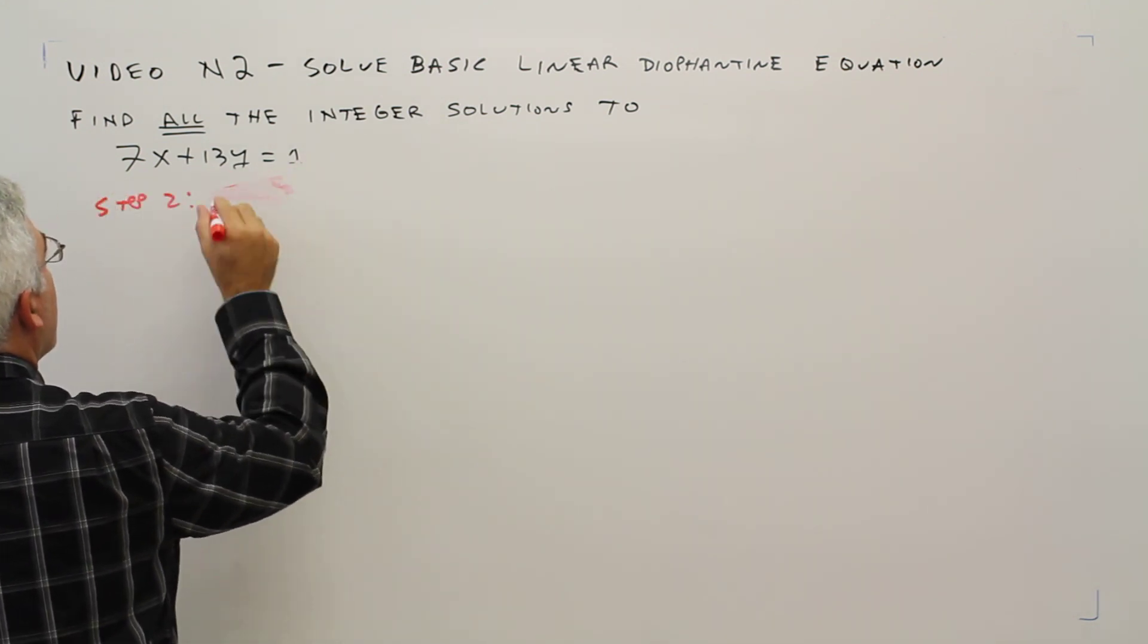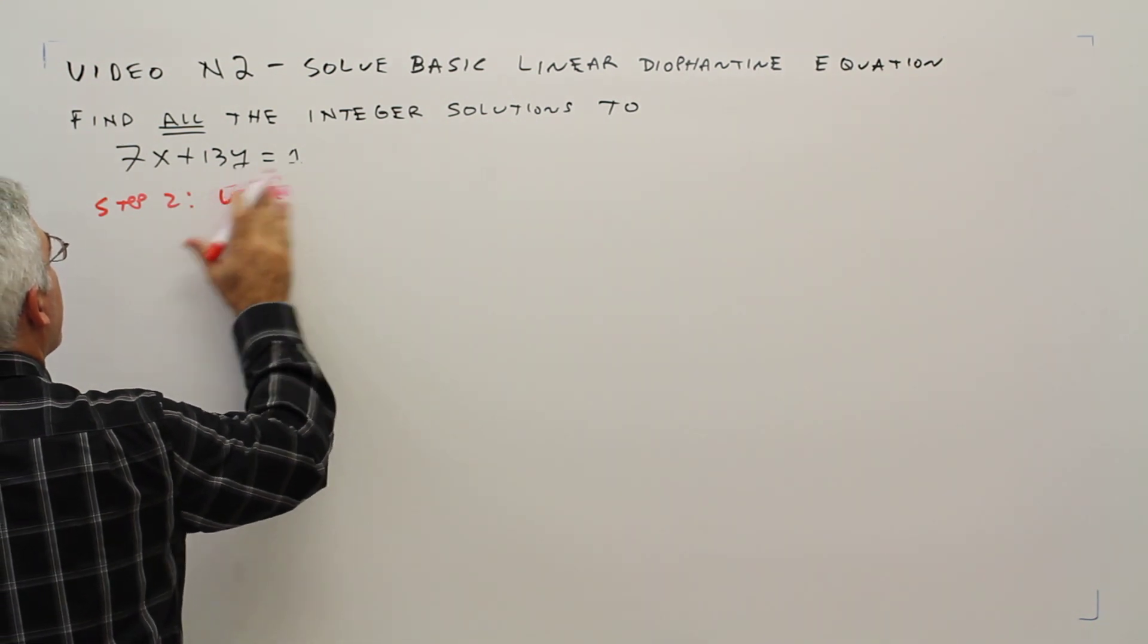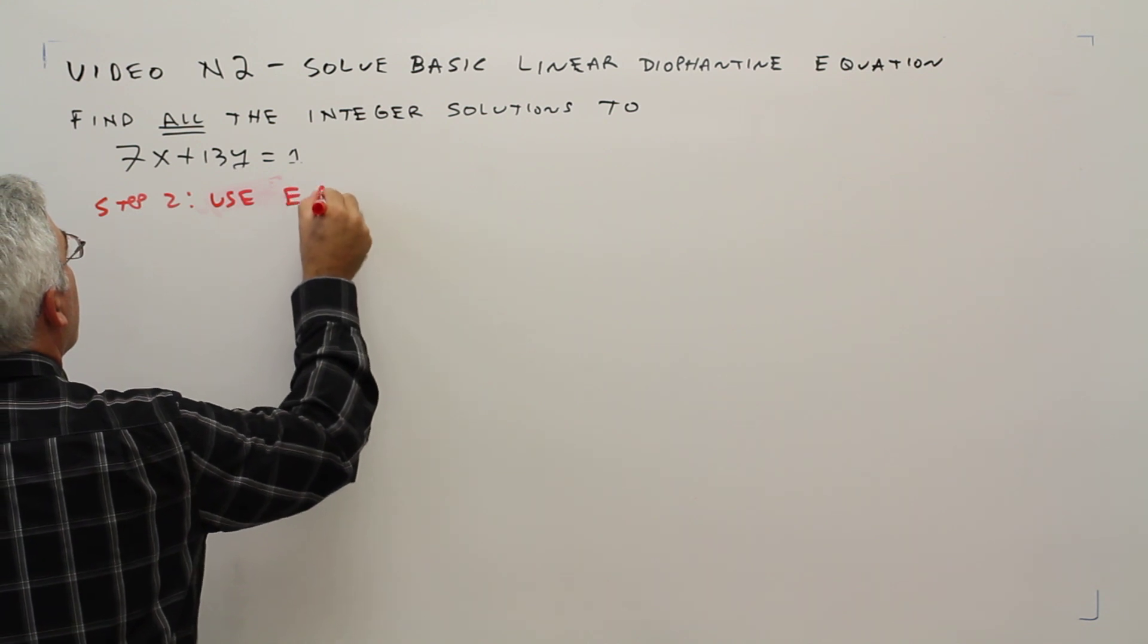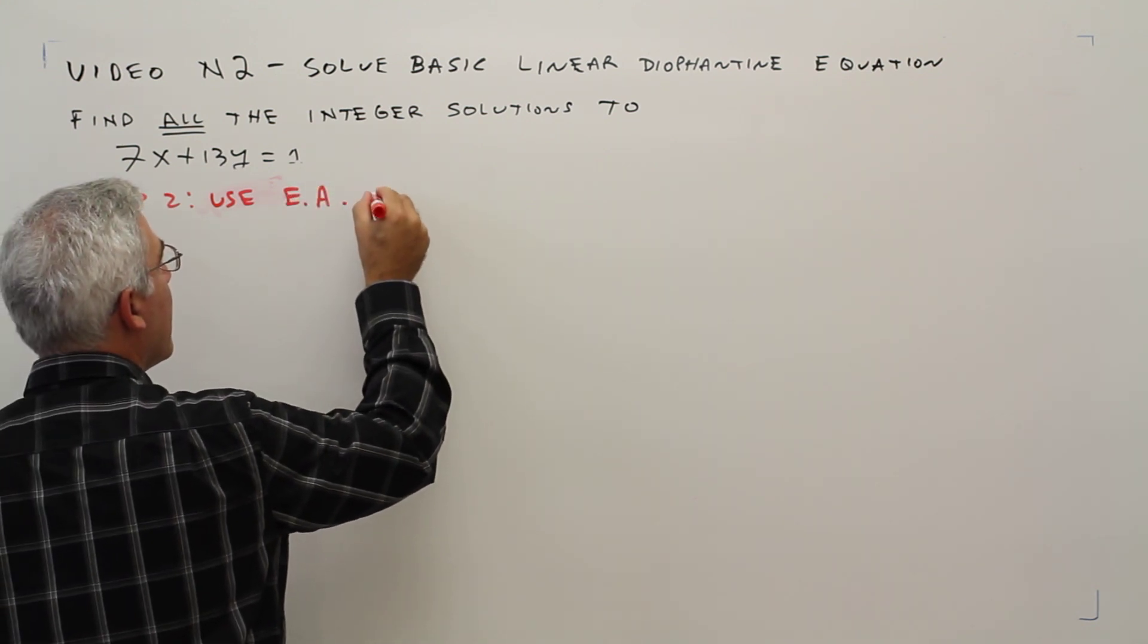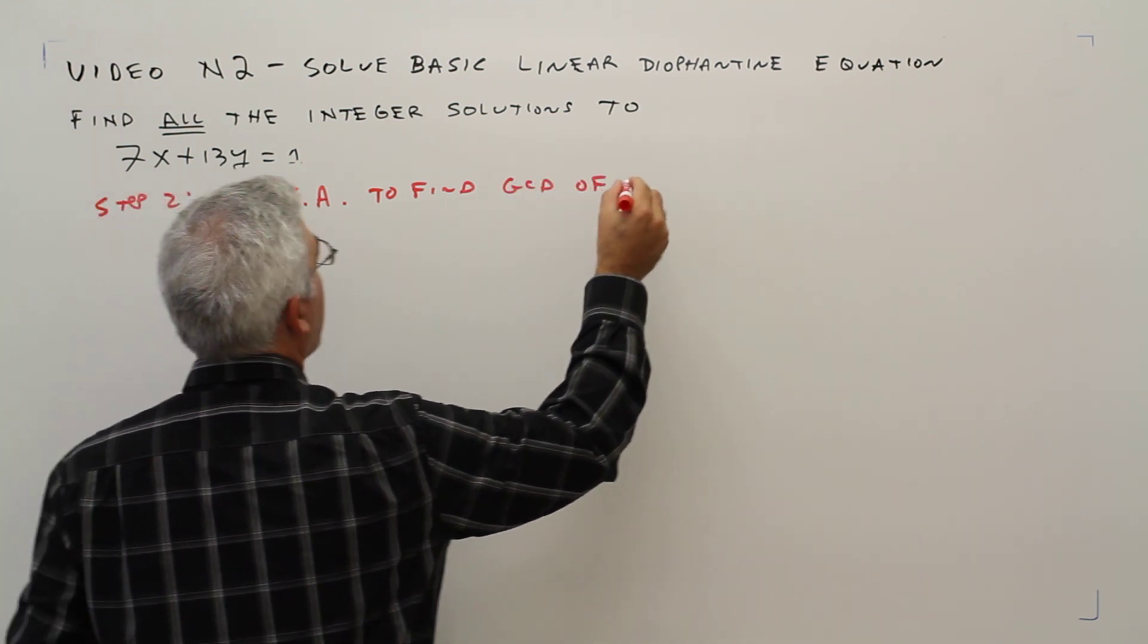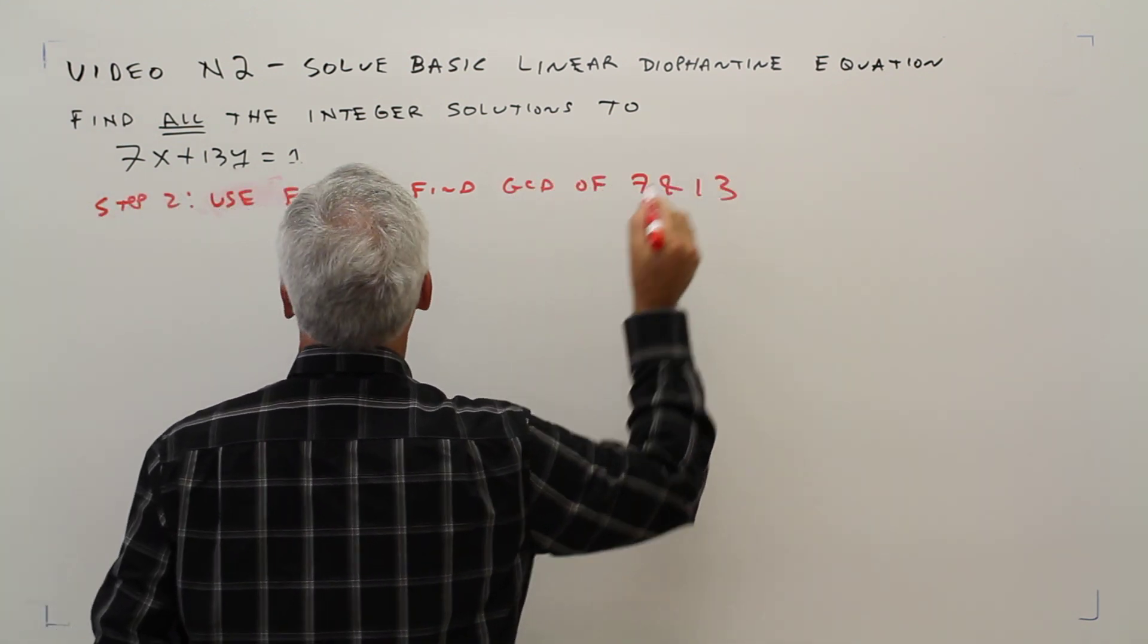Use the Euclidean algorithm to find GCD of 7 and 13.